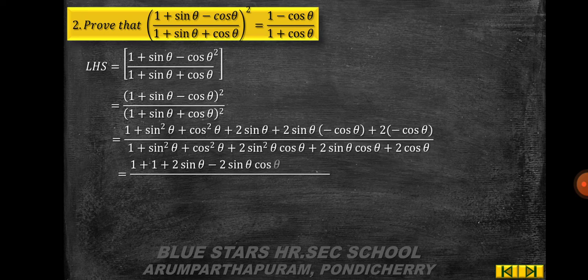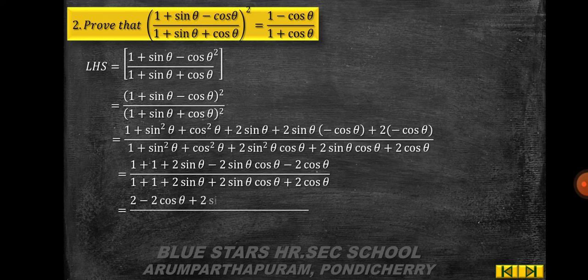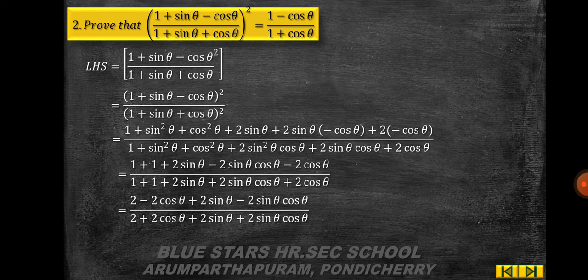The numerator simplifies using sin²θ + cos²θ = 1 to give 1 + 1 + 2sinθ − 2sinθcosθ − 2cosθ = 2 − 2cosθ + 2sinθ − 2sinθcosθ. The denominator gives 1 + 1 + 2sinθ + 2sinθcosθ + 2cosθ = 2 + 2cosθ + 2sinθ + 2sinθcosθ.